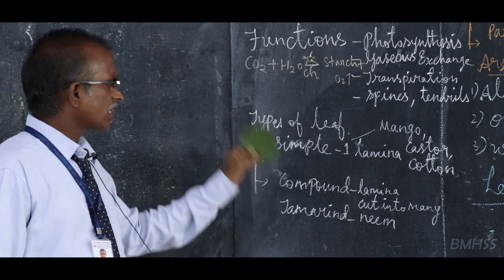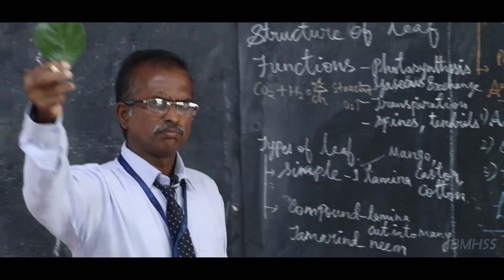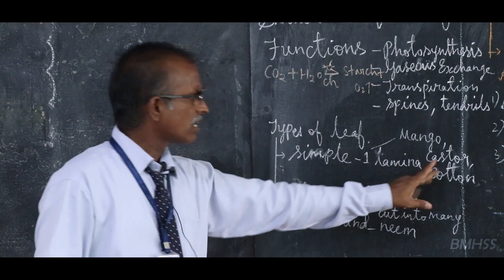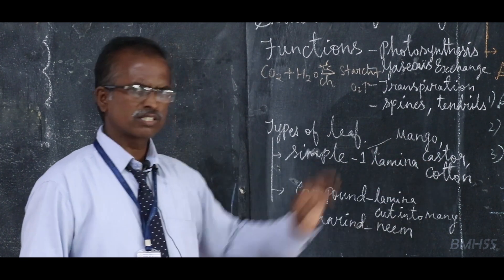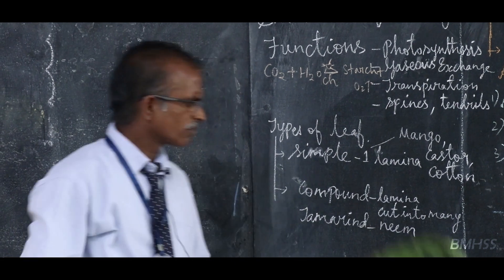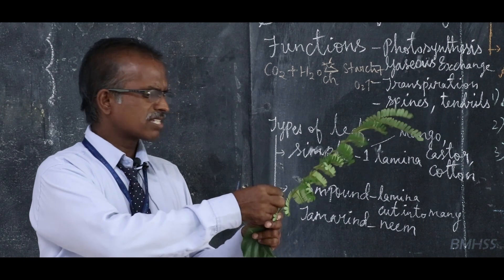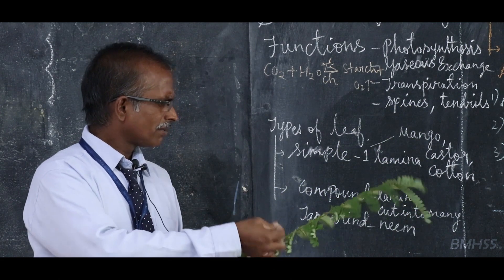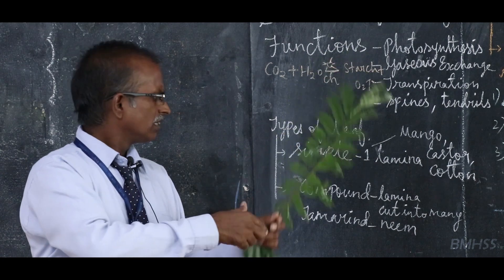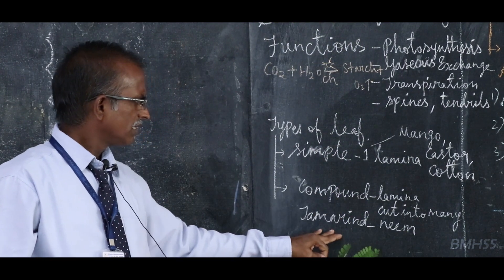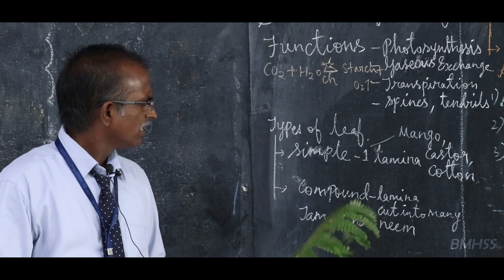Now, types of the leaf. There are two types of leaf. First, the simple leaf — where a single lamina is present, and it has an axillary bud. Examples: mango, castor, cotton. Second, the compound leaf — where the leaf is divided into many leaflets, with many laminas arranged on one common stalk. Examples: tamarind, neem, and drumstick leaves.